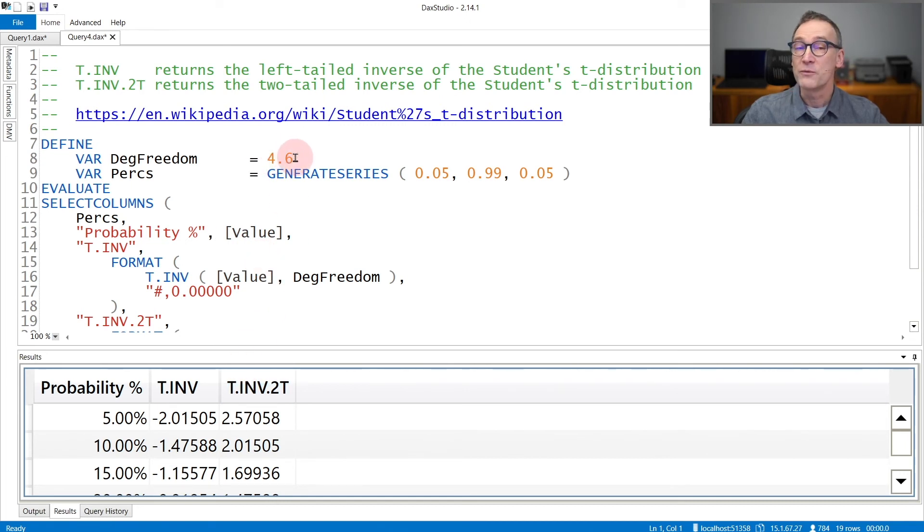The same that I used in the previous example. I generate values for the percentage from 0.05 to 0.99, and for each probability, I provide the value of the t-inv and t-inv2t.